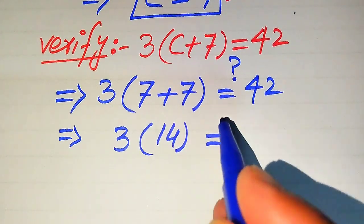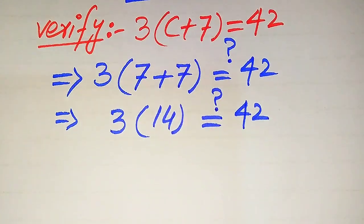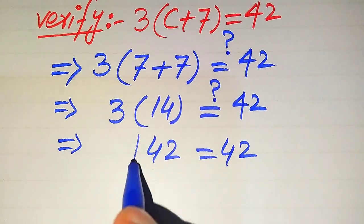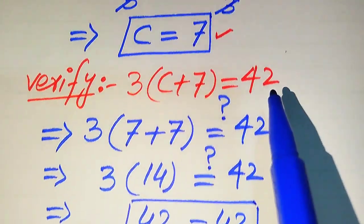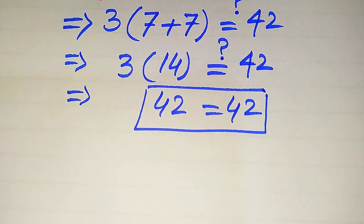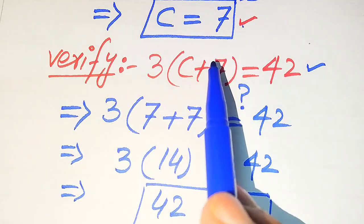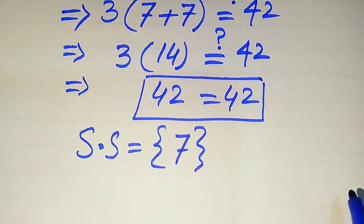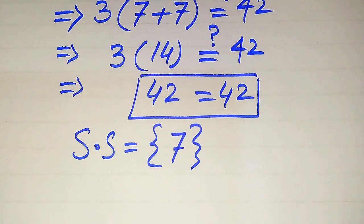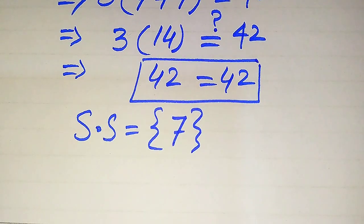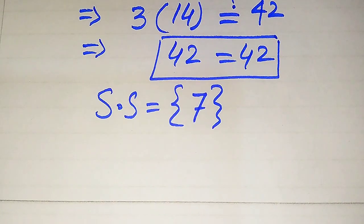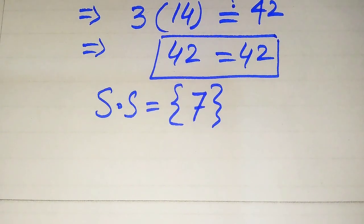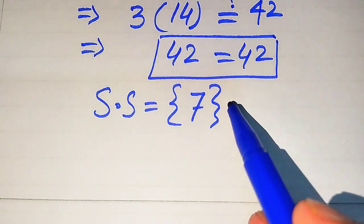We get 3 times 14, which equals 42. So the left hand side equals 42, which matches the right hand side. This means c equals 7 satisfies the given equation, so the solution set is c equals 7. The roots which satisfy the given equation are called solutions, and the roots which do not satisfy it are called extraneous roots. Here we have only one solution, which is 7.